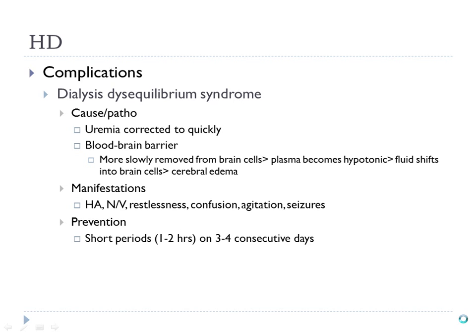Remember the blood-brain barrier. The uremia is being pulled off the systemic circulation at a fast rate, but because of the blood-brain barrier, the uremia stays higher in the brain longer. Because of that, the plasma becomes more hypotonic than the cerebral blood flow.